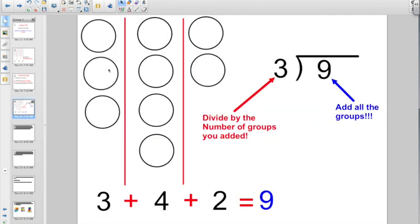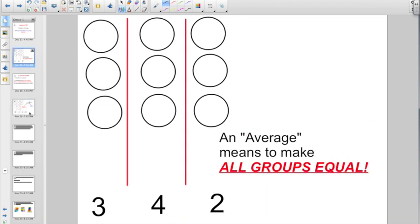So if we went back to our picture here, we took three plus four plus two. That equals nine, right? We add up all the groups. And we divide by the number of groups you added. One group, two groups, three groups. So we're going to divide by three. That's how we ended up with three, if you remember here, right?